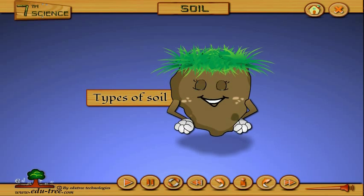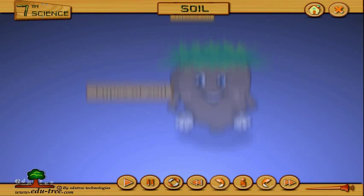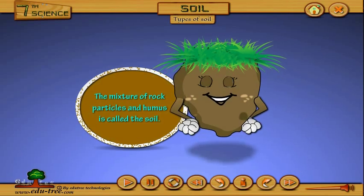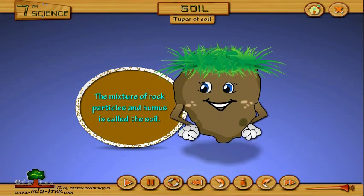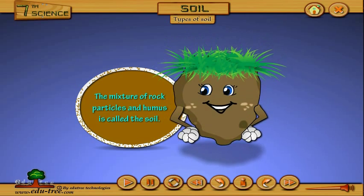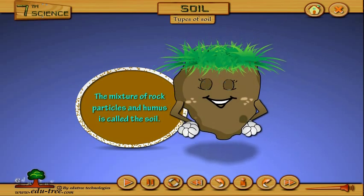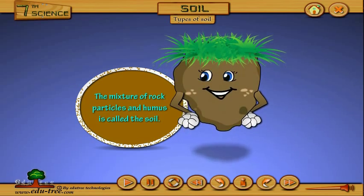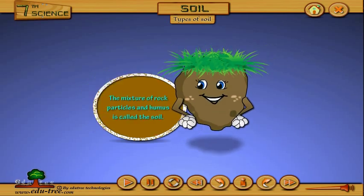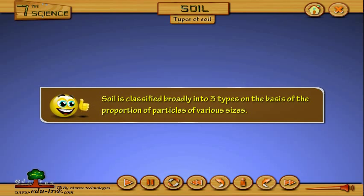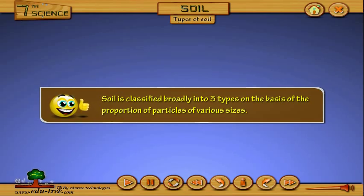Types of Soil. The mixture of rock particles and humus is called the soil. Soil is classified broadly into three types, on the basis of the proportion of particles of various sizes.